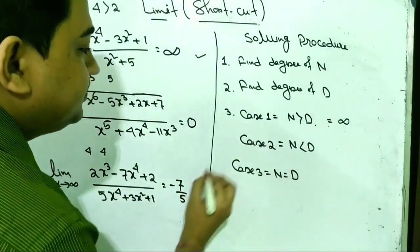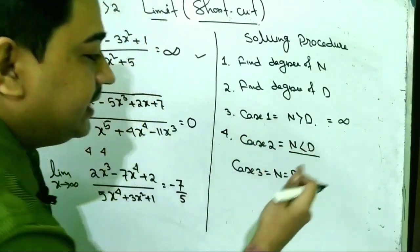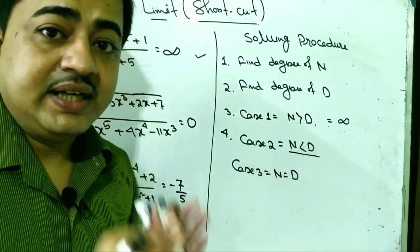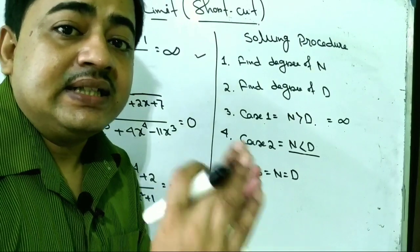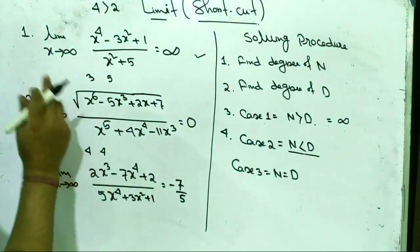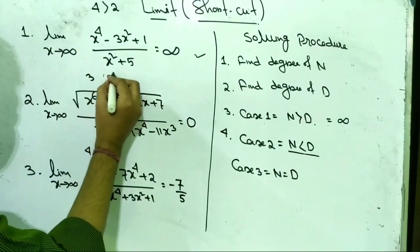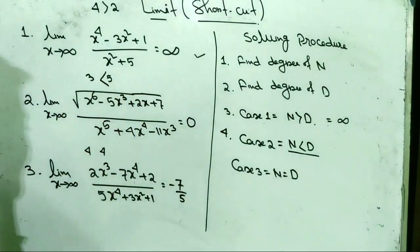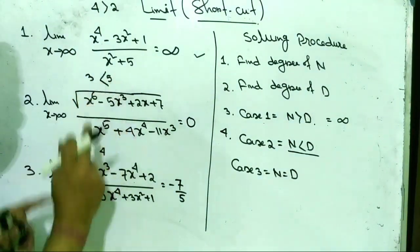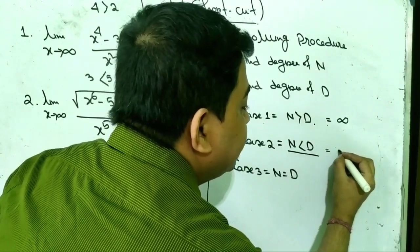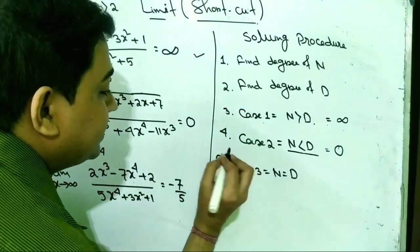Case number 2: if the degree of the numerator is less than the degree of the denominator — for example in problem number 2, the degree of the numerator is 3 and the degree of the denominator is 5, that is 3 less than 5 — then the value of this type of limit is 0.